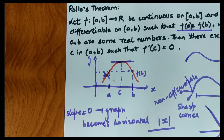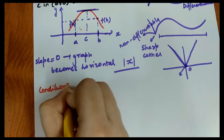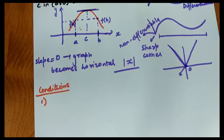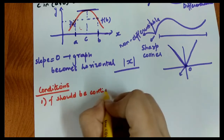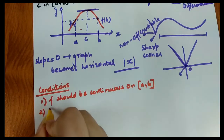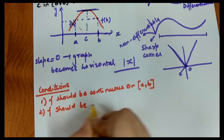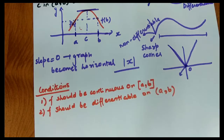Now let's list the conditions for Rolle's Theorem that we verify when solving questions. There are four conditions. The first condition is that the function should be continuous on [a, b]. The second condition is that the function should be differentiable on (a, b).